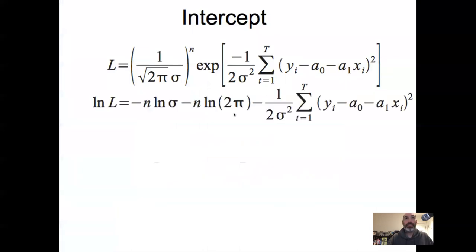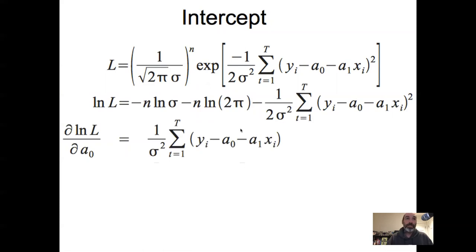We take our log-likelihood and take the derivative with respect to the intercept a0. The normalizing constant doesn't have an a0 in it, so that goes away. The derivative of the parenthetical term drops a two out in front, which cancels the two in the denominator. Then the derivative of what's inside with respect to a0 gives zero from y, zero from a1*x, and just minus one from a0, which cancels the minus one out front. This is progressing exactly the same as when we were fitting a mean — the only difference is that minus a1*x is tagging along.